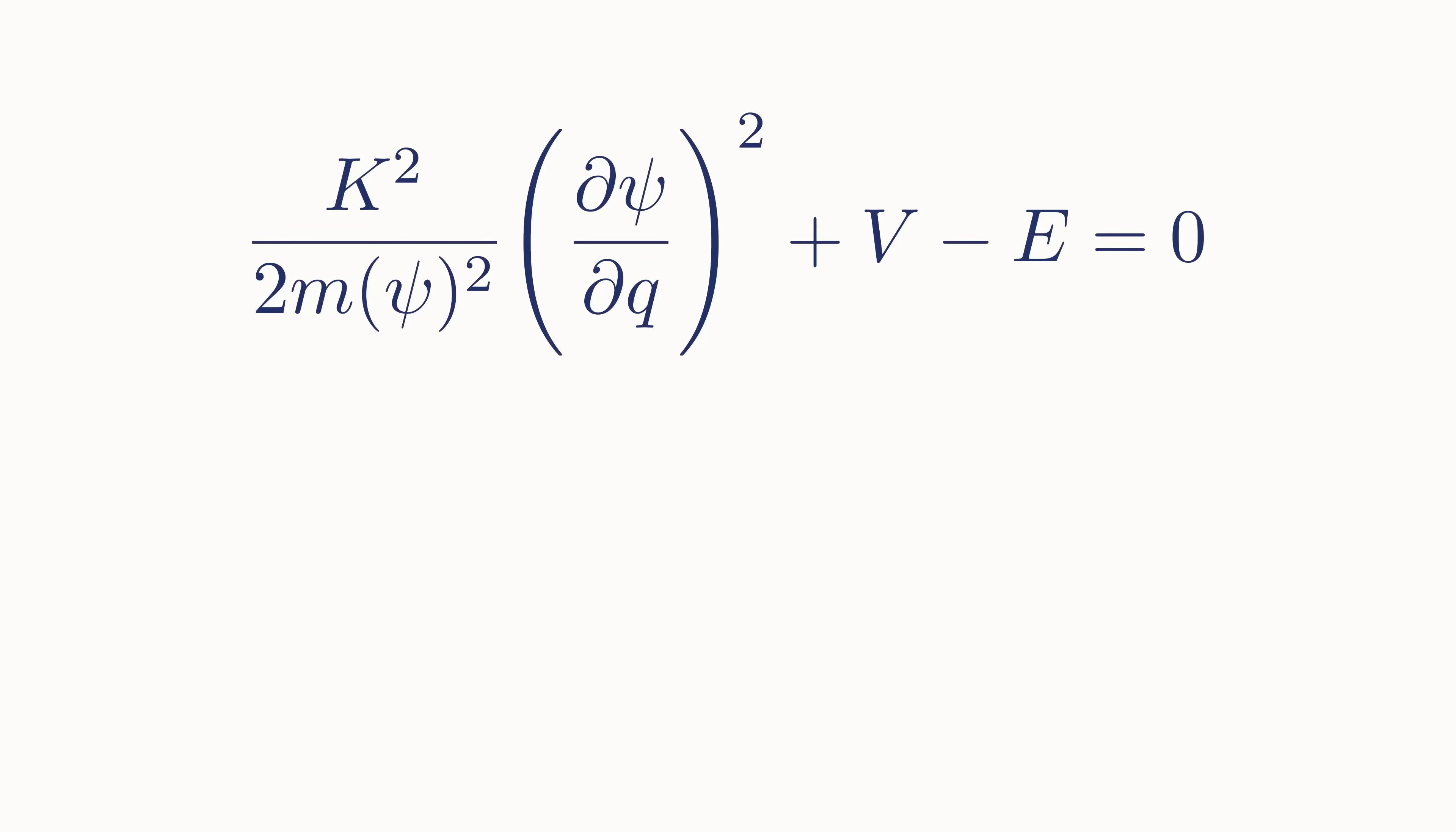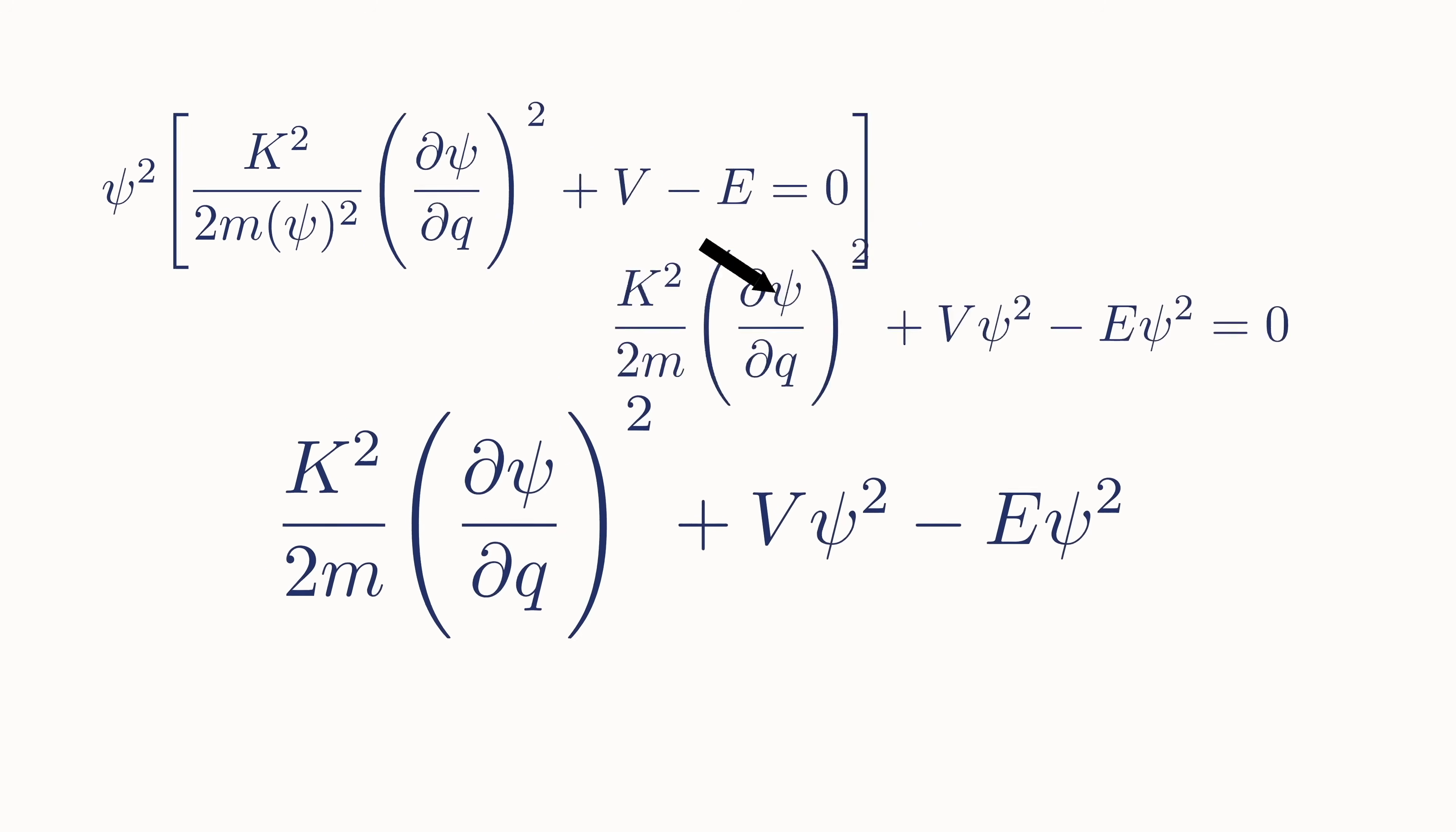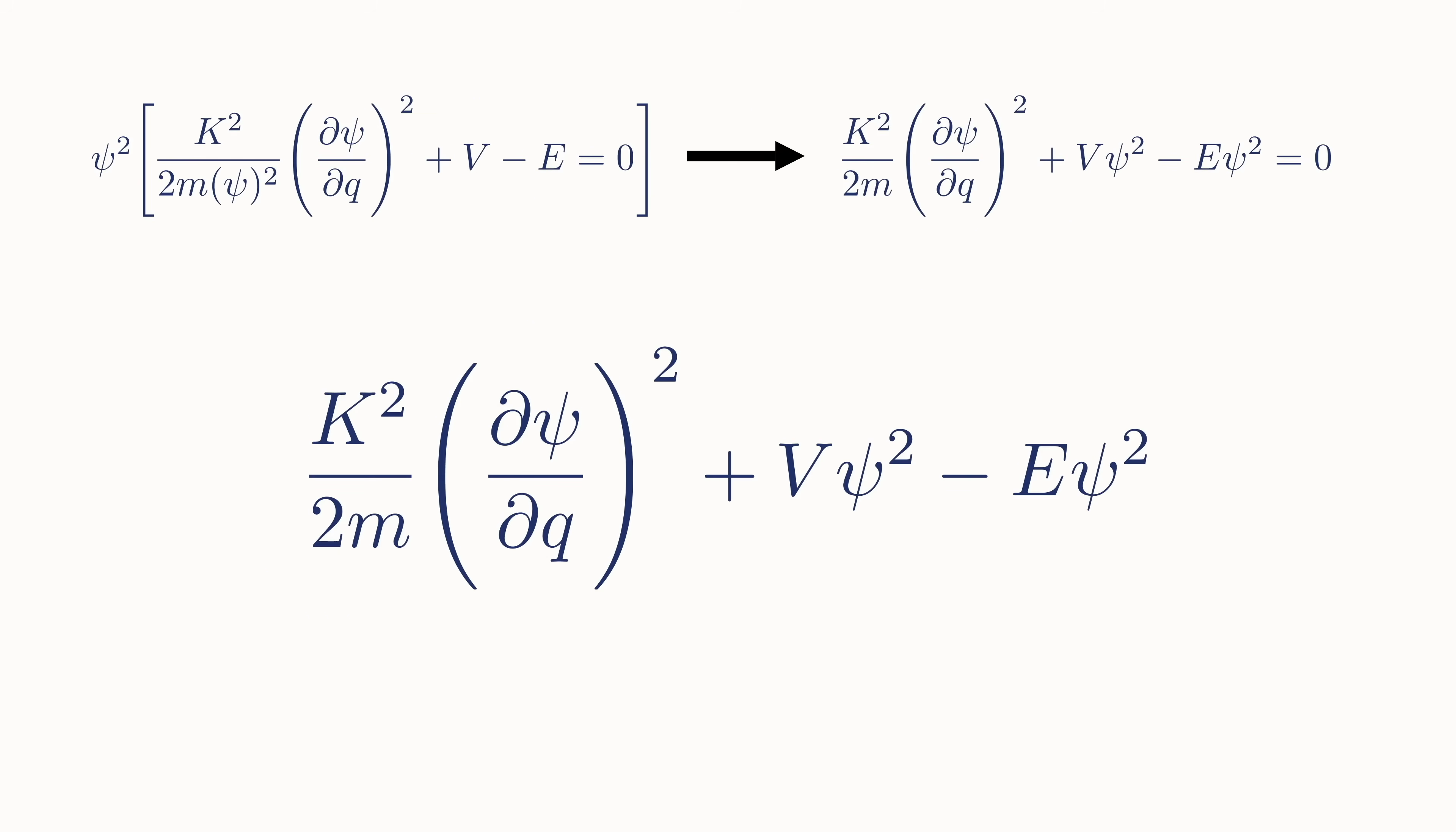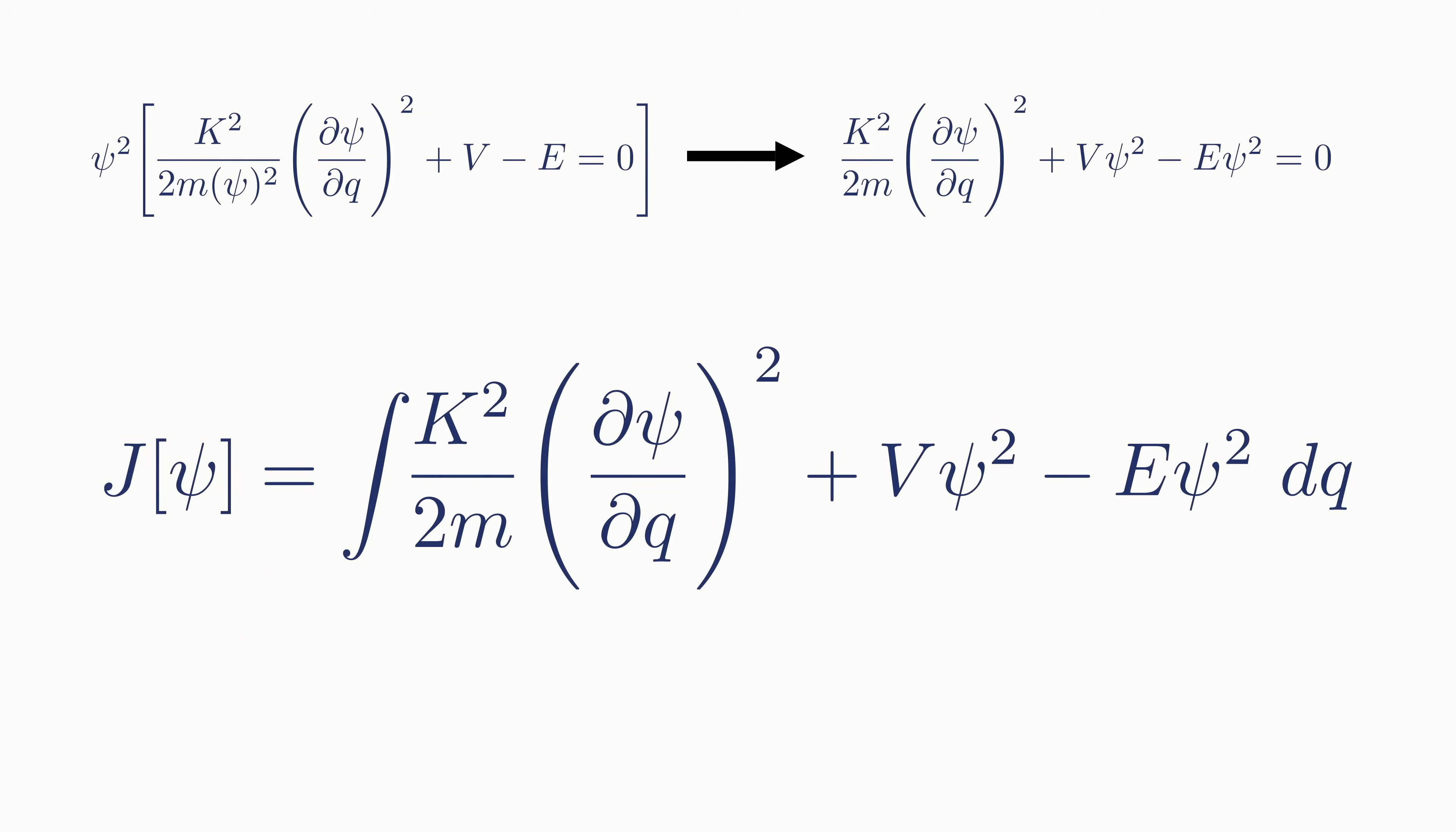He labels this quantity J, and it's a functional, which is just a technical term for a mathematical object that takes a function as an input and outputs a number. This is the most critical juncture of the derivation, and where Schrödinger takes the incredible leap of insight that no one before him had ever taken. You see, though Hamilton proposed a beautiful framework that united optics and mechanics, it really only works in a certain limit.